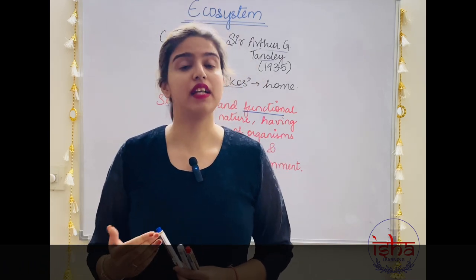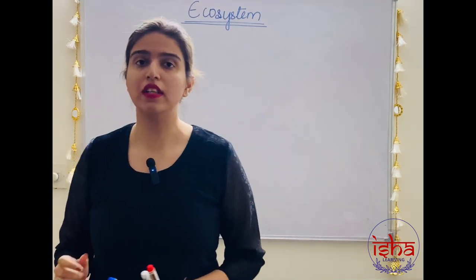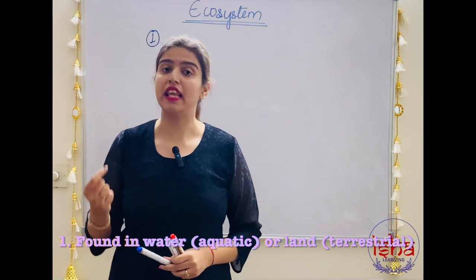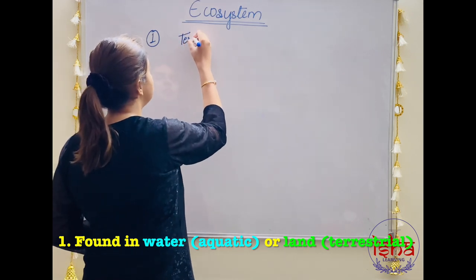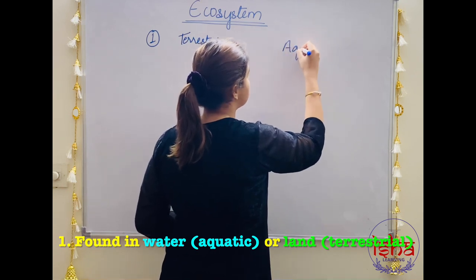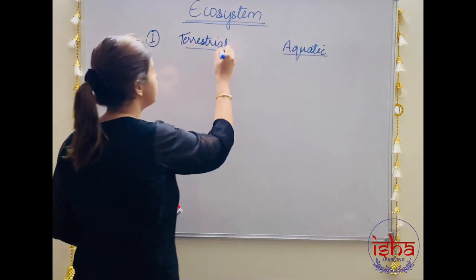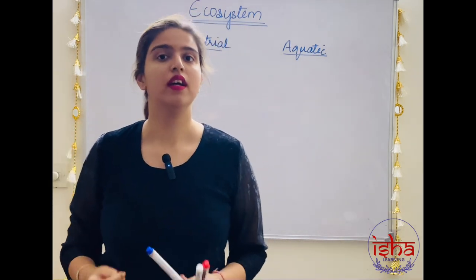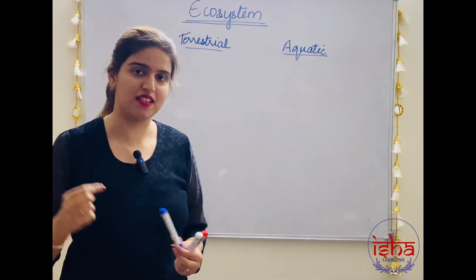So how can we classify the ecosystem? Classification of ecosystems is first done on the basis of whether it is found in water or on land. If the ecosystem is found on land, it is called a terrestrial ecosystem, and if found in water, it is known as an aquatic ecosystem. Examples of terrestrial ecosystems would be forests and grasslands. Aquatic ecosystems would include ponds, lakes, estuaries, and so on.